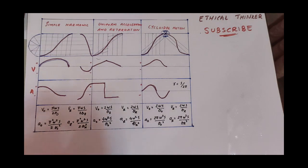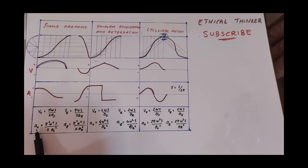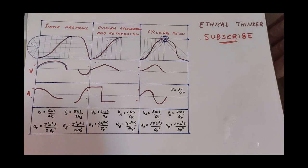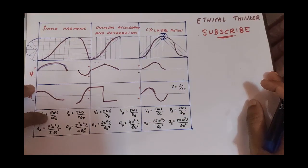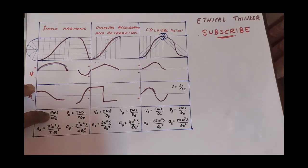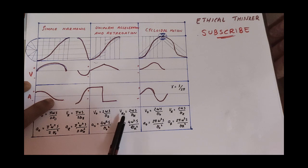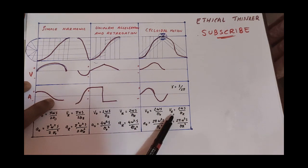The equation is the same. The maximum velocity of the follower during outstroke, and the maximum acceleration of the follower during outstroke. The formula involves 2-omega-S divided by theta for the velocity, and similarly for acceleration.